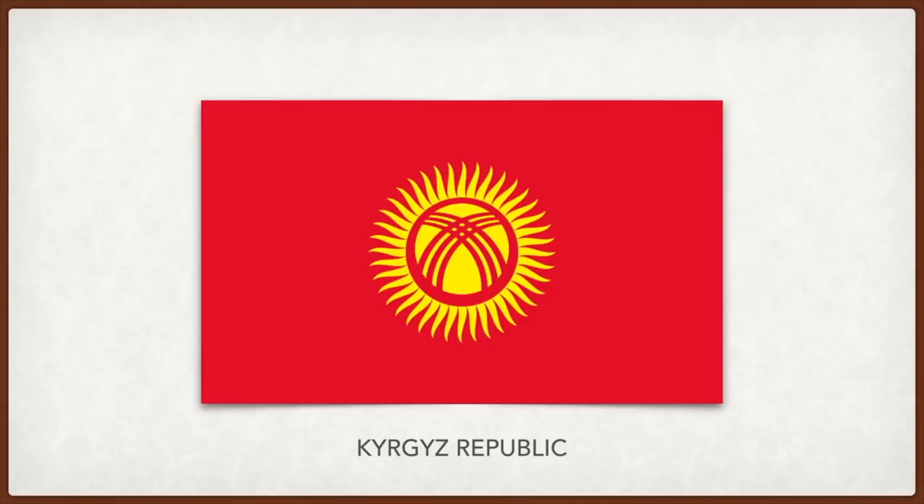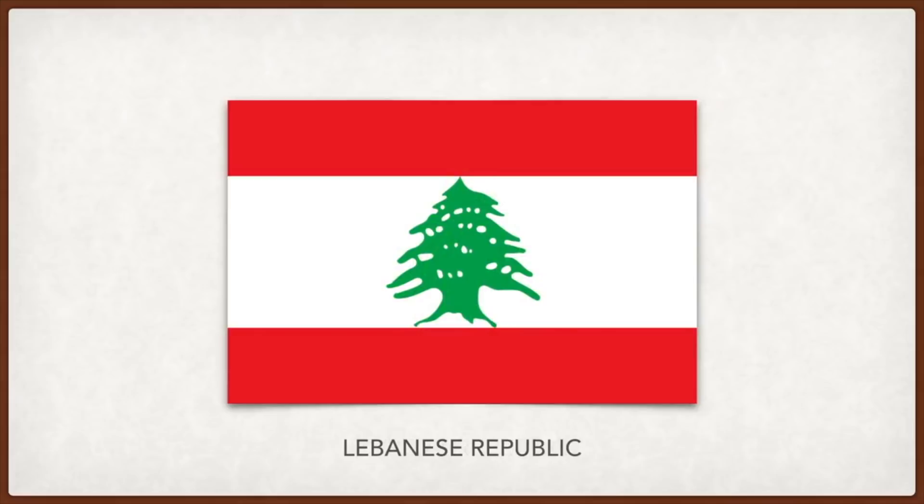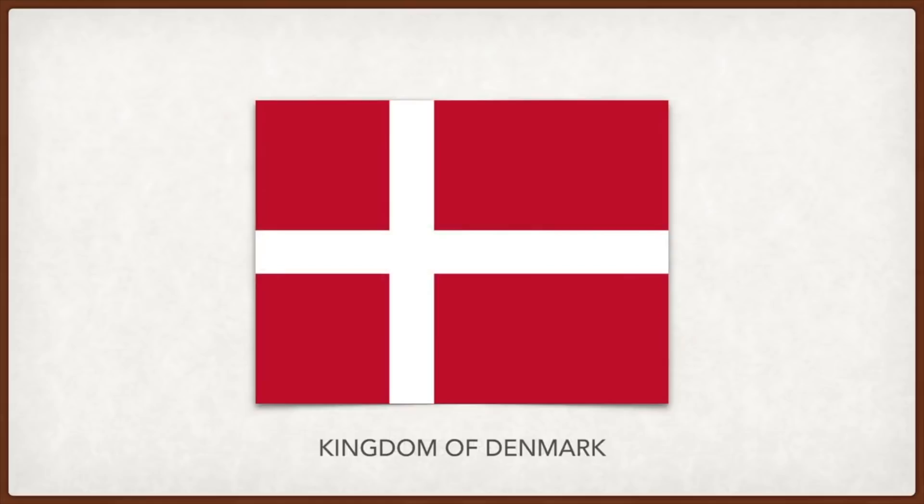Lebanon: the cedar is a symbol of holiness, eternity, hope, freedom, and memory. The white is a symbol of purity and peace, and the red is for the blood shed to protect the country. Denmark: according to tradition, the Danish flag fell from heaven on June 15, 1219, during the Battle of Lindanisse as a sign from God of his support for King Valdemar II against the pagan Estonians; the red symbolizes the battle and the white cross suggests the holy cause.